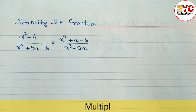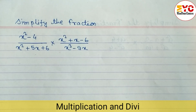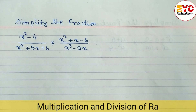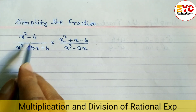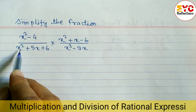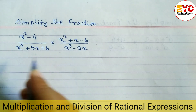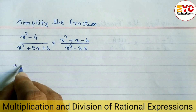In this video we are going to learn how to simplify the fraction which is in the form of multiplication and division. We have a question: x squared minus 4 by x squared plus 5x plus 6. So let's take a start.